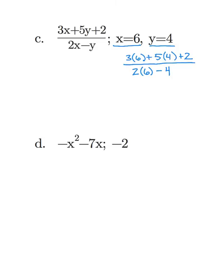From here we want to go ahead and simplify using order of operations. So I'm going to start with my multiplications. 3 times 6 gives me 18 plus 5 times 4 gives me 20 plus 2 over 2 times 6 is 12 minus 4. From there we can do our adding and our subtracting. So we get 18 plus 20 is 38 plus 2 gives me 40, and 12 minus 4 is 8. Finally we can combine this into one problem. 40 divided by 8 is equal to 5. So our expression when we plug in x equals 6 and y equals 4 we get 5.